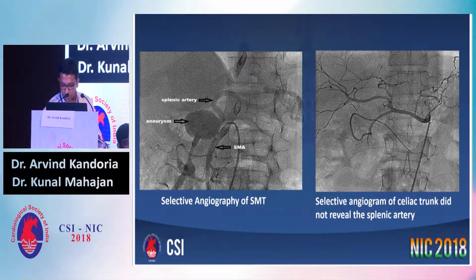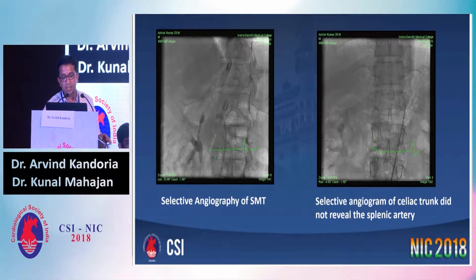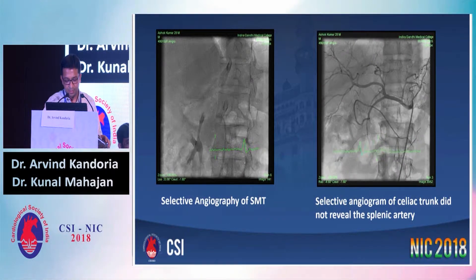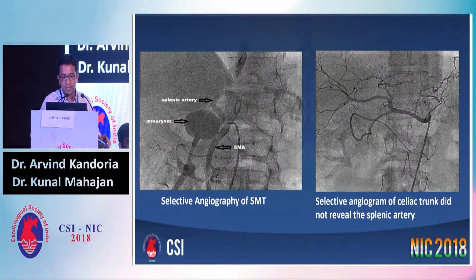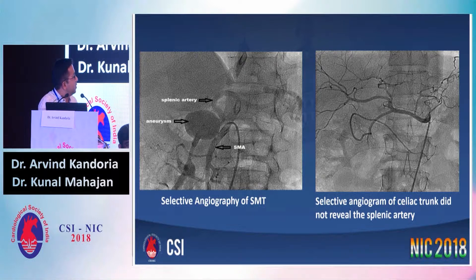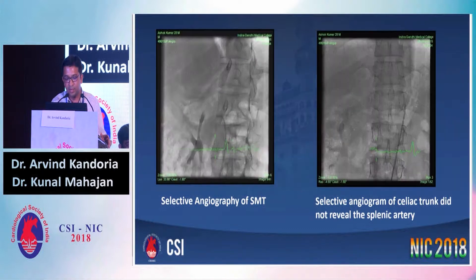This was the selective angiogram of the superior mesenteric trunk. You can see this is the pictorial diagram, and the CT imaging findings were confirmed. Usually the splenic artery arises from the celiac trunk, but in this case there was no origin of the splenic artery from the celiac trunk — rather it was originating from the superior mesenteric artery.